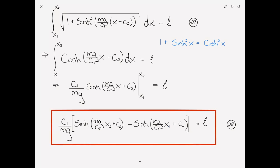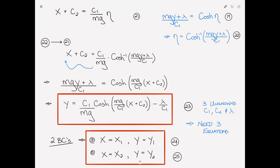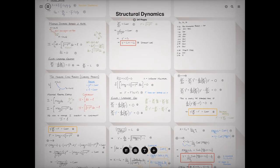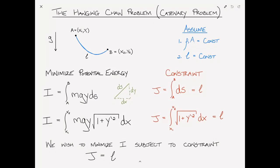Clearly, for anything other than the most simple case, this third equation is going to require a numerical solution. These three equations — the two boundary conditions applied to the catenary equation and this constraint equation involving only c1 and c2 — can be solved numerically for the exact shape of the catenary. Before ending, I'd like to go back to the beginning and run through it very quickly so everyone is up with the flow. I'm not so interested in the mathematics right now, just in what it is that we did.